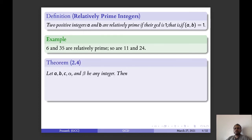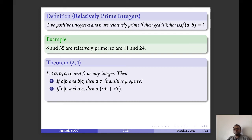Now we have a theorem that you have already studied. Let a, b, c, alpha and beta be any integers. Then, first, if a divides b and b divides c, then a divides c — this is the transitive property. Second, if a divides b and a divides c, then a will divide alpha·b plus beta·c.